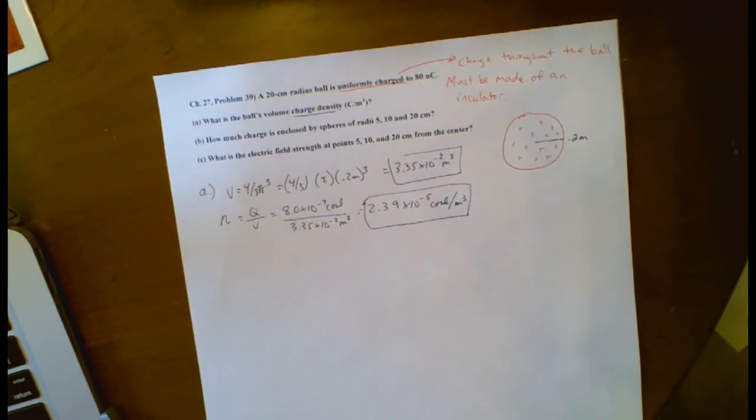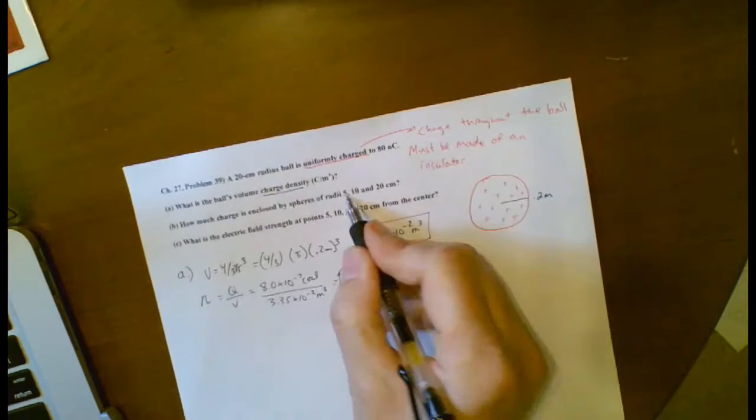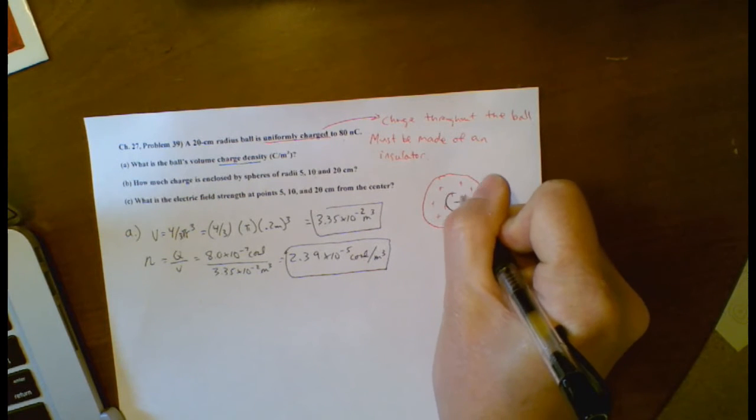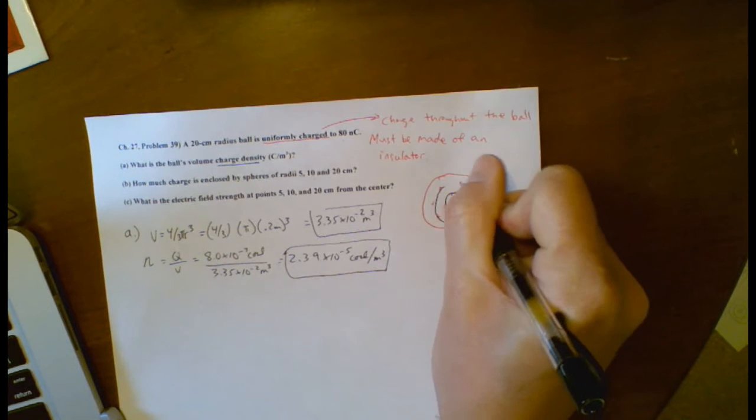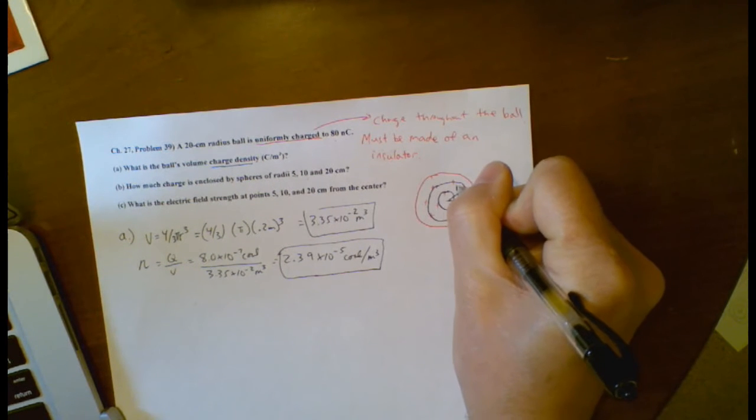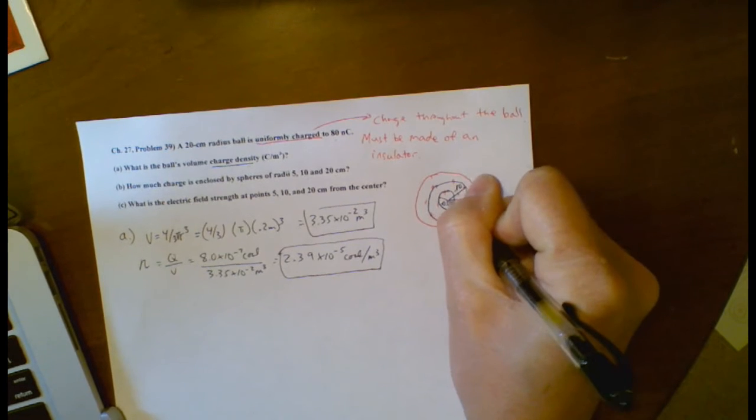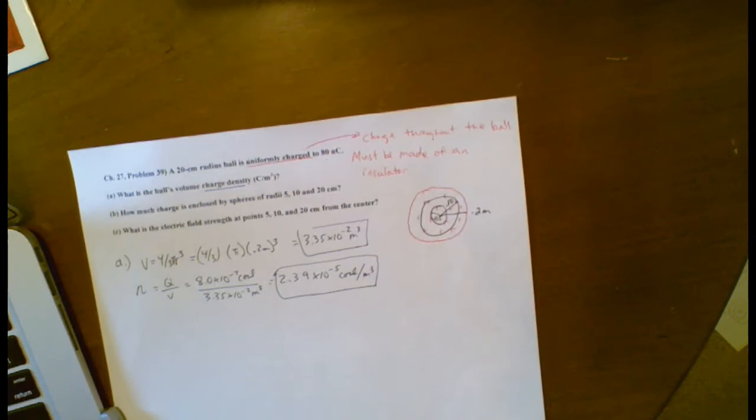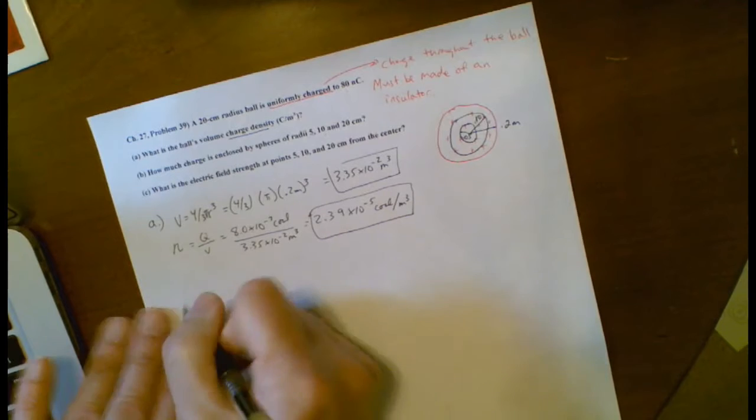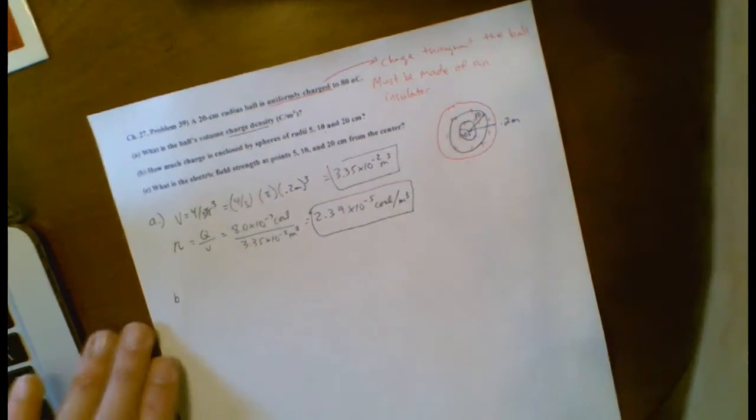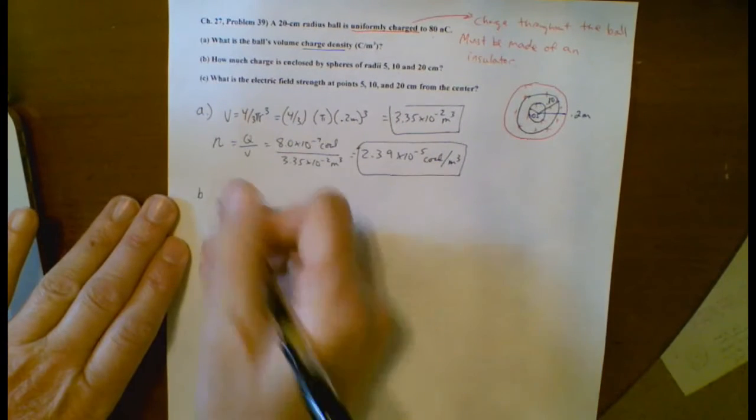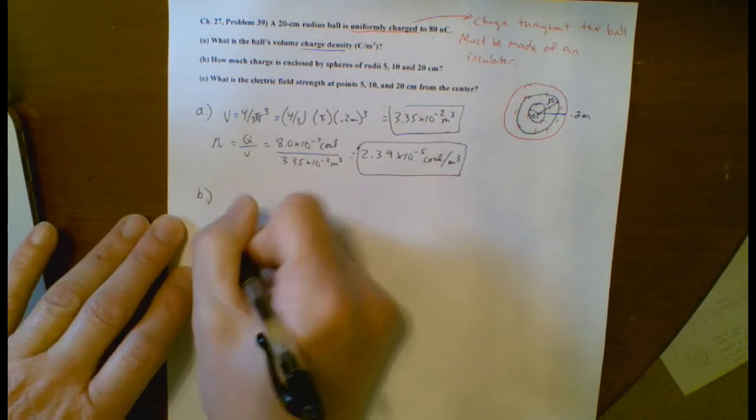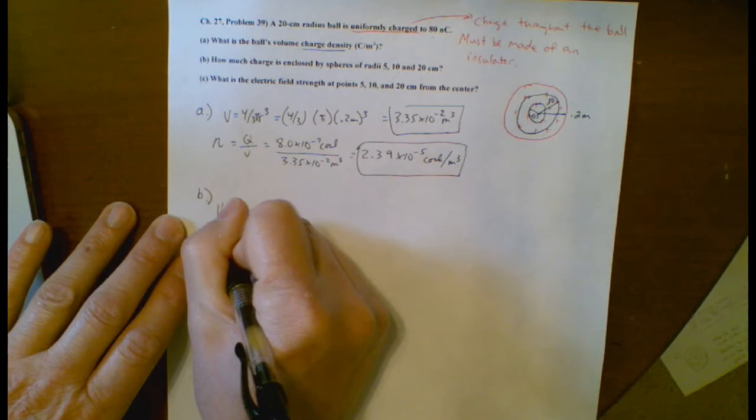So the next spot is asking you how much charge is enclosed by spheres of radius 5, 10, and 20 centimeters. So here's how you kind of want to think about that. If I've got a 5-centimeter sphere here, a 10-centimeter sphere there, I drew that way too small. So this is 0.1 meters, 0.05 meters, and then the whole sphere is 0.2 meters. The first one, 5 centimeters, what I have to do is, so this is for B, I'm going to have to find the volume for this, and then I'm going to multiply it by the charge density.